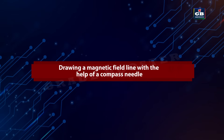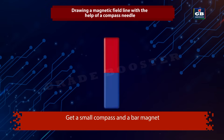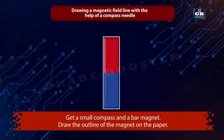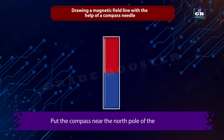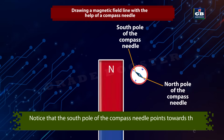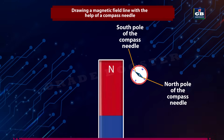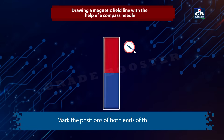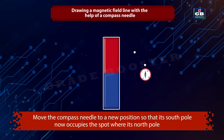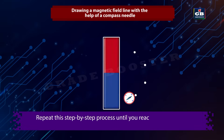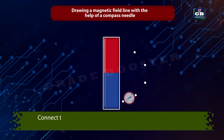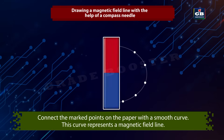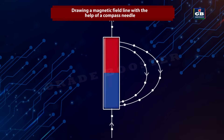Drawing a magnetic field line with the help of a compass needle. Get a small compass and a bar magnet. Draw the outline of the magnet on the paper. Put the compass near the north pole of the magnet. Notice that the south pole of the compass needle points towards the north pole of the magnet, and the north pole of the compass points away from the magnet's north pole. Mark the positions of both ends of the needle. Move the compass needle to a new position so that its south pole now occupies the spot where its north pole was. Repeat this step-by-step process until you reach the south pole of the magnet. Connect the marked points with a smooth curve — this curve represents a magnetic field line. Repeat the procedure to draw as many lines as you can.